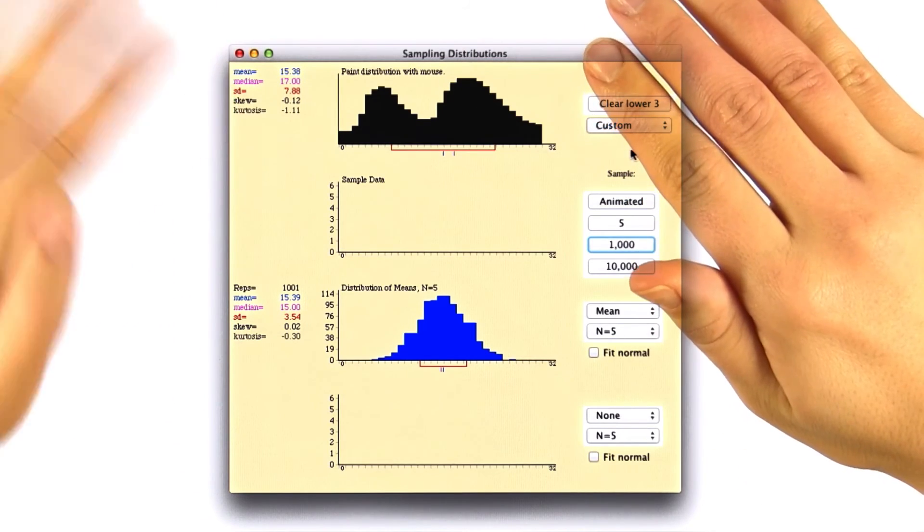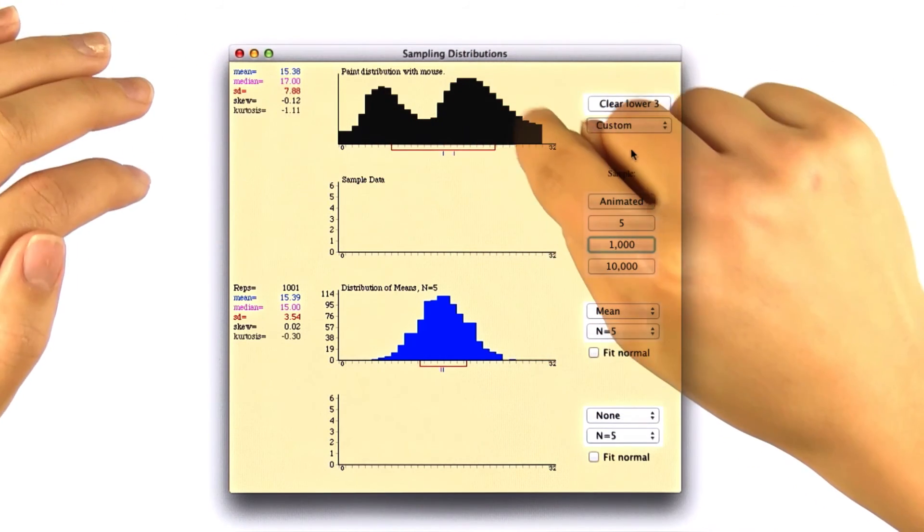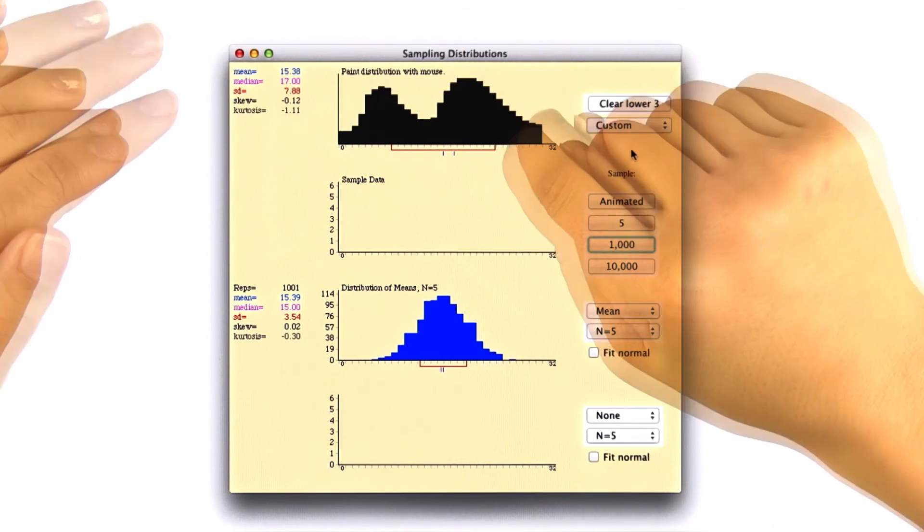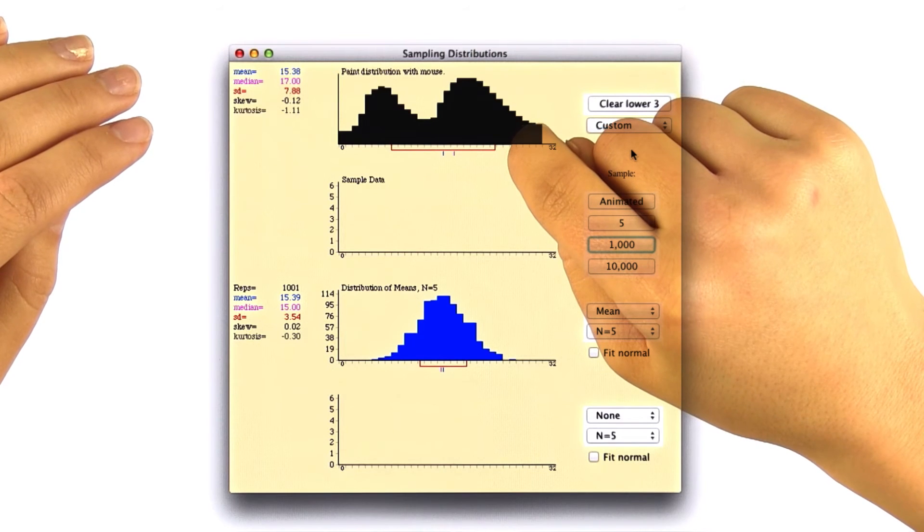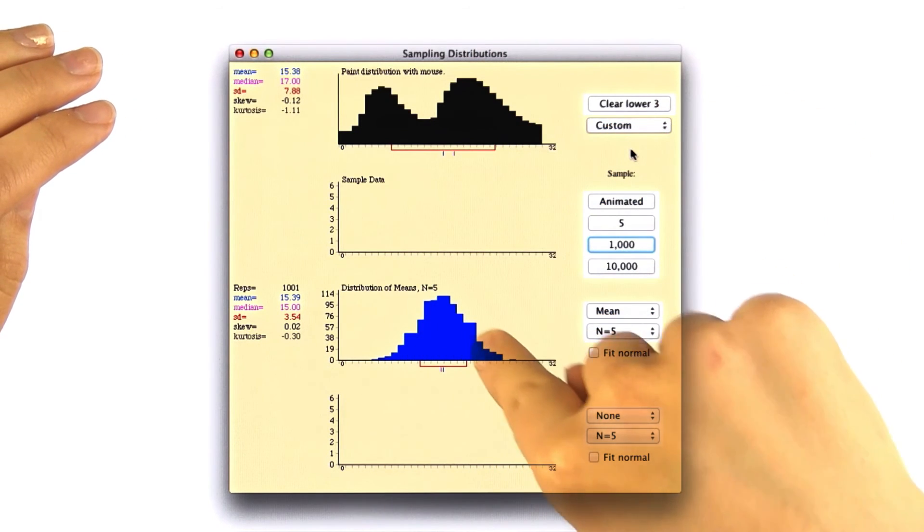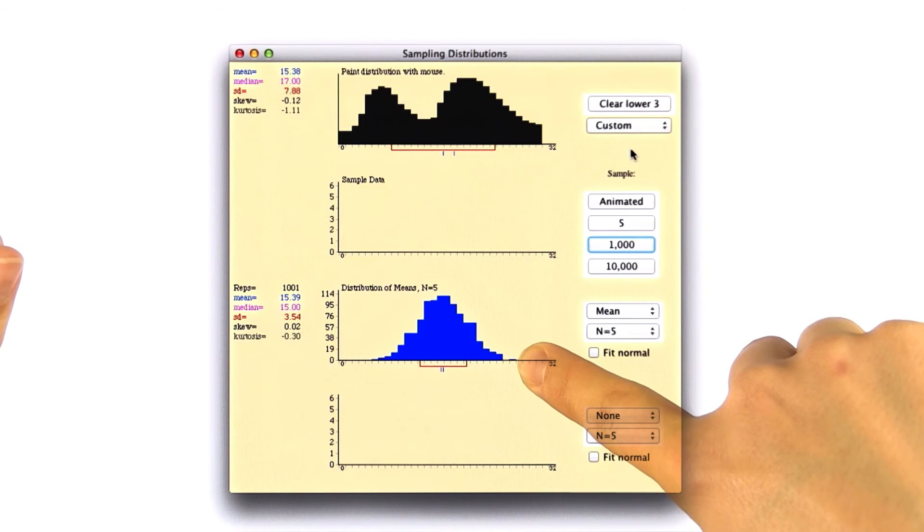The important thing to take away here is that you can have any population of any shape. And then if you plot the distribution of sample means, you'll get a normal distribution. And it'll be more and more normal as n increases.